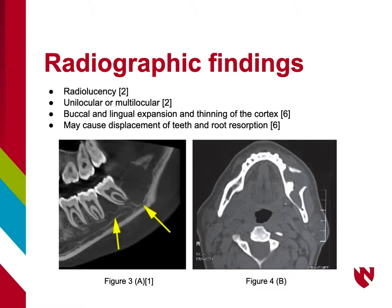Central Giant Cell Granuloma usually appears on the radiograph as a radiolucent area in the jaw. As seen in the cone beam CT in Figure 3A1, the sagittal view shows a multilocular radiolucency with an undulating border. As you can see in this image, tooth number 17 does not show resorption. Figure 4b is an axial CT showing expansion of the left mandibular buccal cortex with cortical perforation.